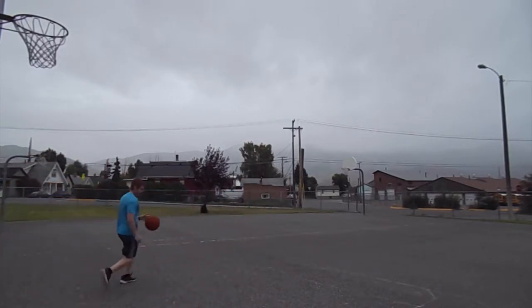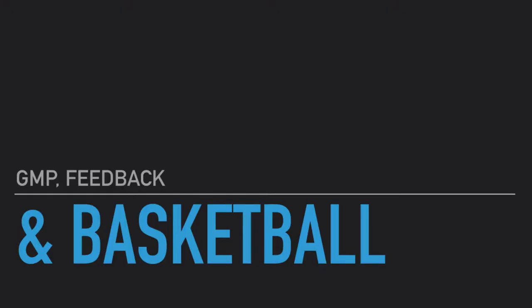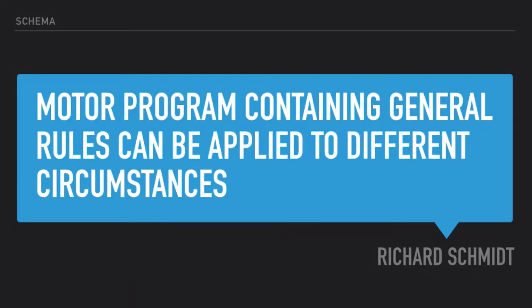What's up guys, Kenneth here, and today we're going over generalized motor programs and feedback. Richard Schmidt's schema theory defines a generalized motor program as an abstract representation of a movement pattern being stored in memory. This representation contains the information necessary to perform a movement, and motor programs containing general rules can be applied in different circumstances.